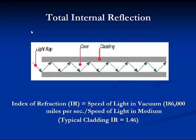When a light ray travels in one material, hits a different material, and reflects back into the original material without any loss of light, total internal reflection occurs. This reflection occurs because the cladding has a different index of refraction — similar to sunlight refracting off the surface of a lake. The index of refraction is the speed of light in a vacuum (186,000 miles per second) divided by the speed of light in the medium. In optical fiber, the cladding has an index of refraction of approximately 1.46, while the core has approximately 1.44 — meaning the cladding is more pure than the core.